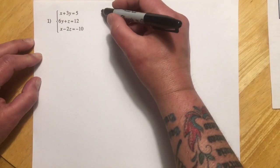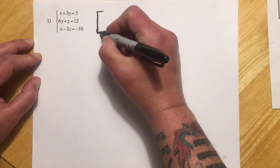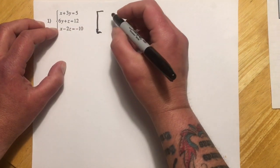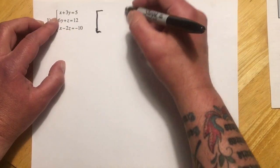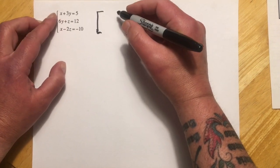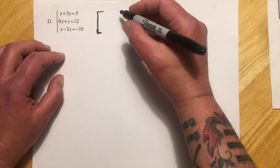So we have the system of linear equations here, and to write it as a matrix what we do is we drop all the x's, y's, and z's and we just worry about the coefficients. We're going to have four columns and three rows, so one row for each equation and then one column for x, one column for y, one column for z, and one for the constants.